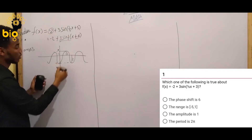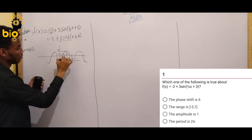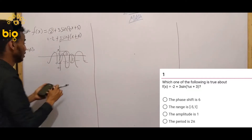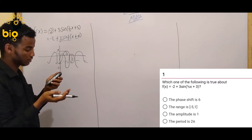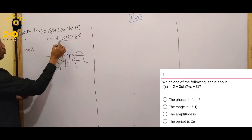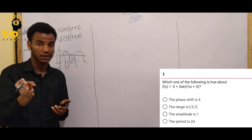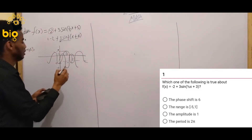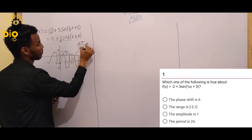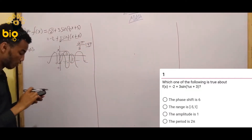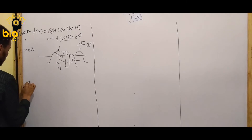So the range: minus amplitude to plus amplitude — that is, minus 3 to plus 3. The amplitude is 1 — wait, no, the amplitude is 3. For the period, the formula is 2π over k. Here k is the coefficient, so the period is 2π over (1/2), which equals 4π.